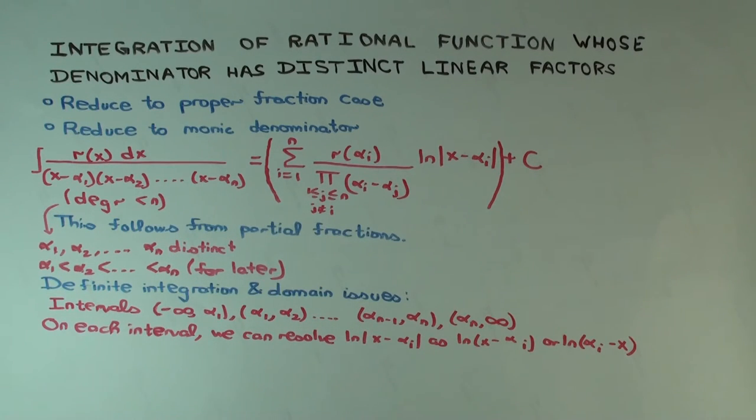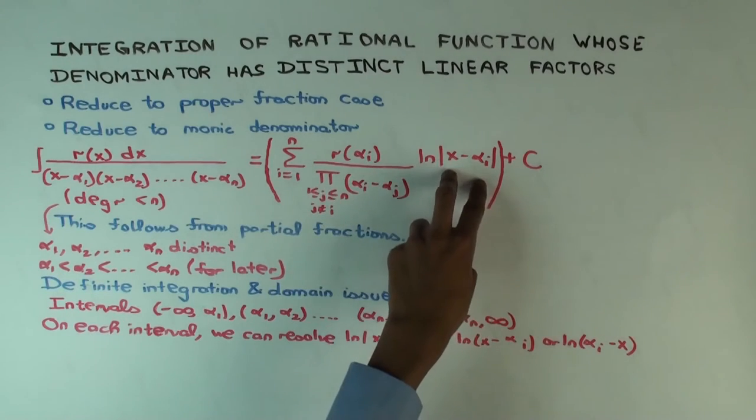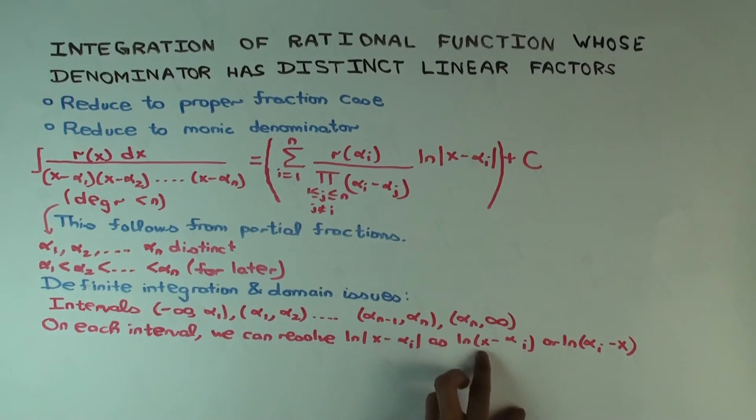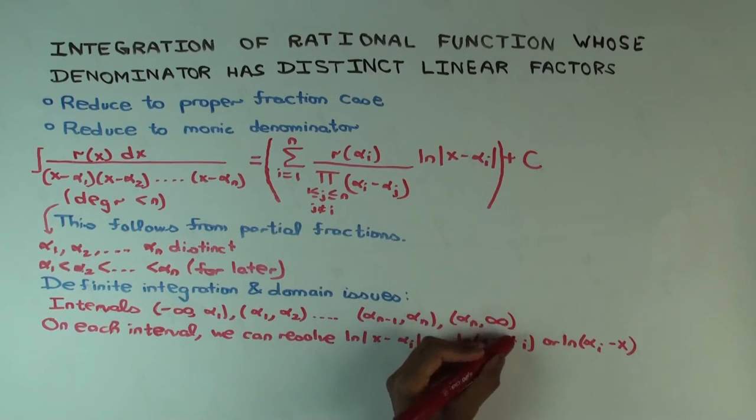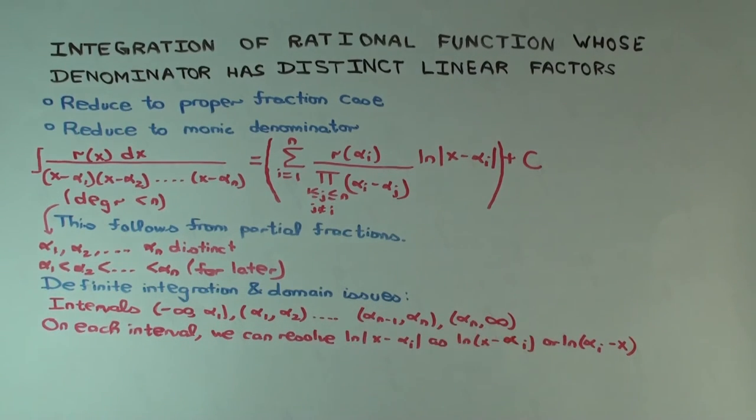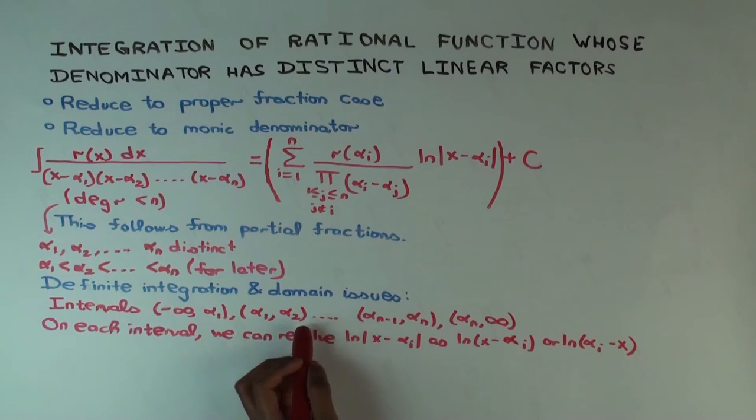Based on whether it's positive or negative, you could simplify this as either ln(x - α_i) or ln(α_i - x). For instance, let's say you're on the interval α₂ to α₃.